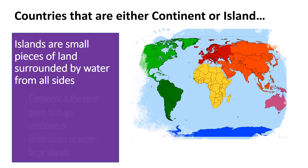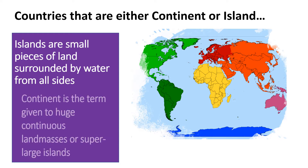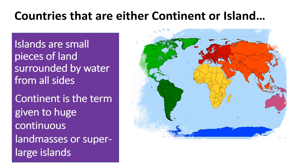An island formed in a river or a large lake can be called an eyot, while the one off the coast is a holm. A geographically related group of islands is called an archipelago. The Philippines is an example of an archipelago.